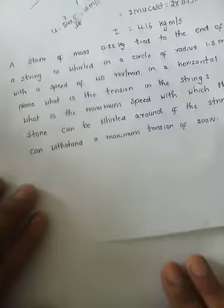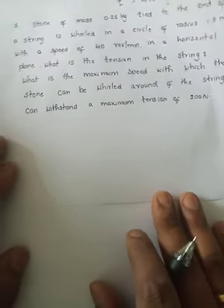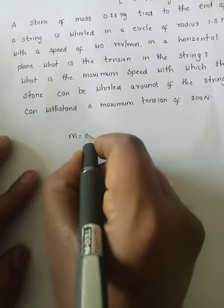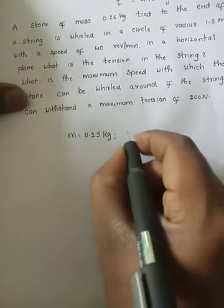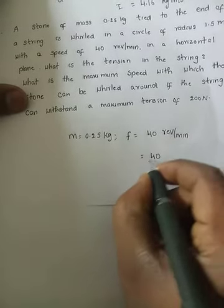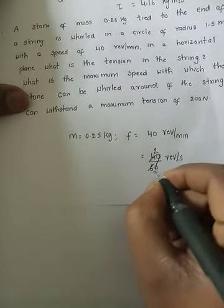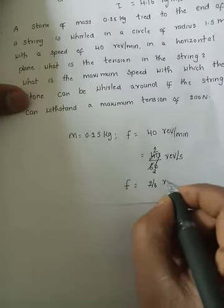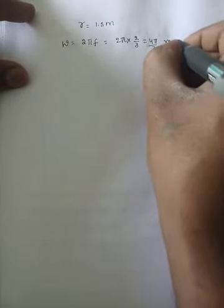Mass of the stone is 0.25 kg. It makes 40 revolutions per minute — converting to per second: 40/60 = 2/3 revolutions per second. It is rotating at a radius of 1.5 meters. Omega equals 2πf = 2π × 2/3 = 4π/3 radians per second.